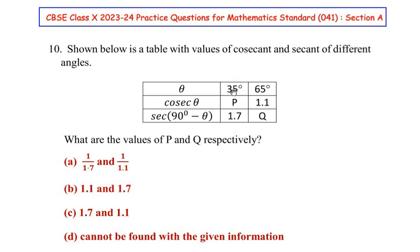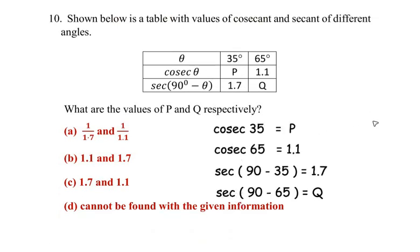Let me write down all the values right now. So this is what it represents: cosec 35 is P, cosec 65 is 1.1, sec of 90 minus 35 we get 1.7, and sec of 90 minus 65 we get Q.